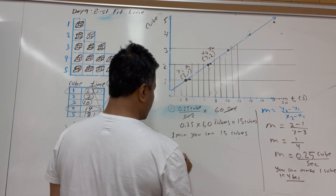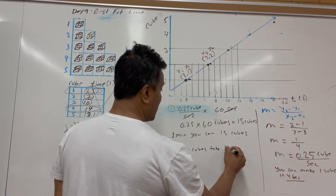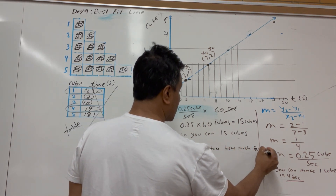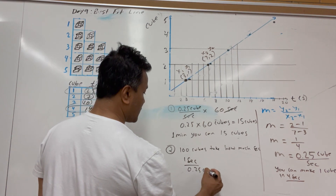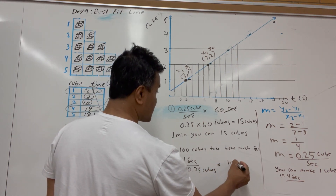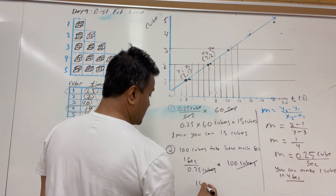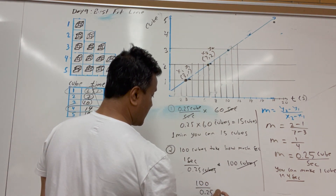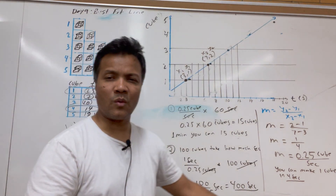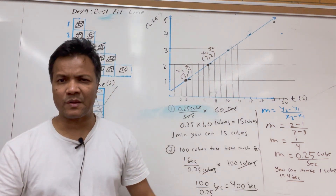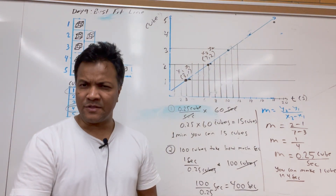Problem number two: 100 cubes takes how many seconds? You have 0.25 cubes per second and you want 100 cubes. The cubes cancel and 100 divided by 0.25 gives 400 seconds. These are the things you can do with the slope. Now we'll learn how to do the best-fit line using linear regression on the TI-84.